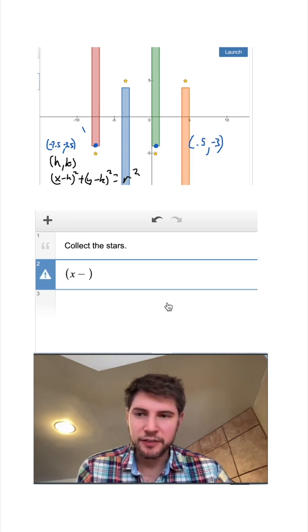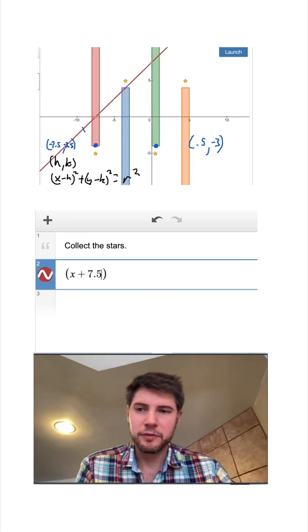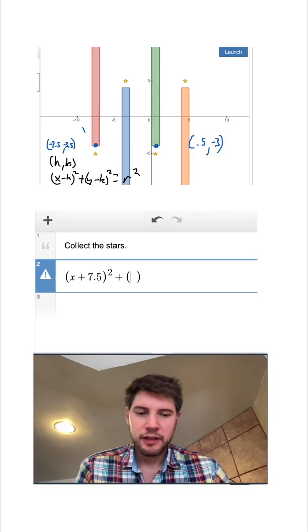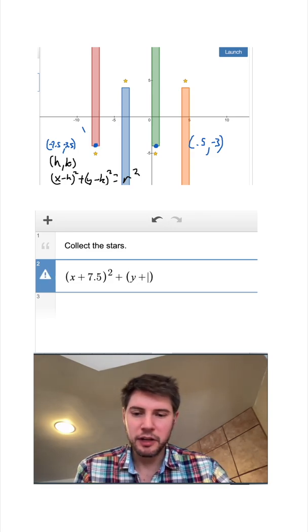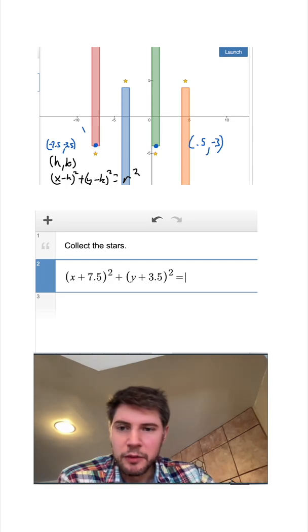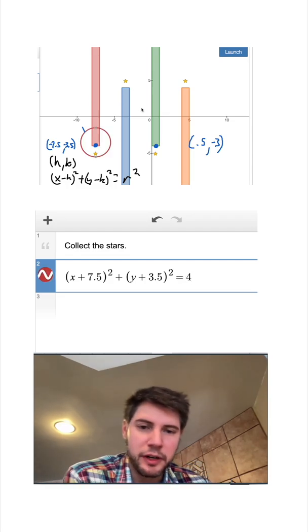And then my h is negative 7.5, so that'd be plus 7.5 squared, plus y minus 3.5, which would then be plus 3.5 squared. And we'll make a radius of 2, and 2 squared is 4.